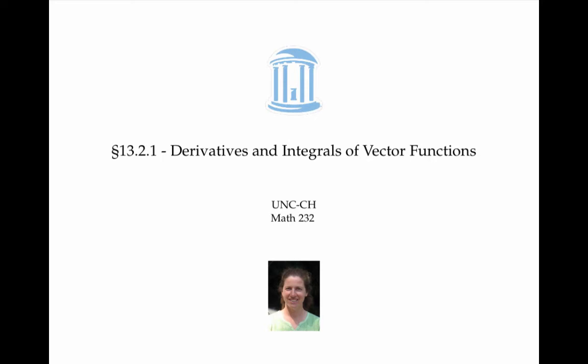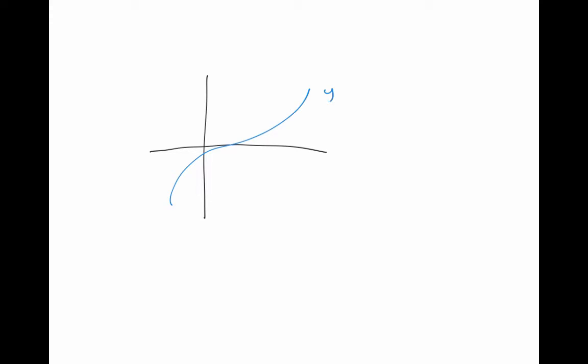This video is about taking derivatives and integrals of vector-valued functions. In calculus one, we took the derivatives of real-valued functions, y equals f of x. We found that f prime of x evaluated at an x value a gave us the slope of the tangent line at x equals a. We first evaluated derivatives by a limiting process, taking the slopes of secant lines in between a and a point close to a.